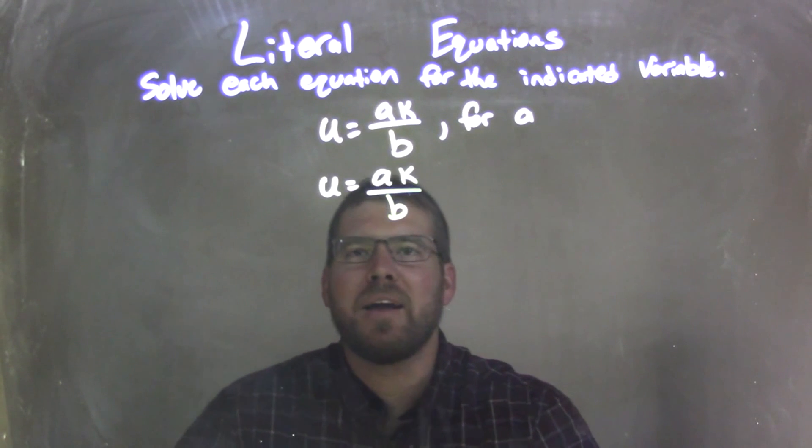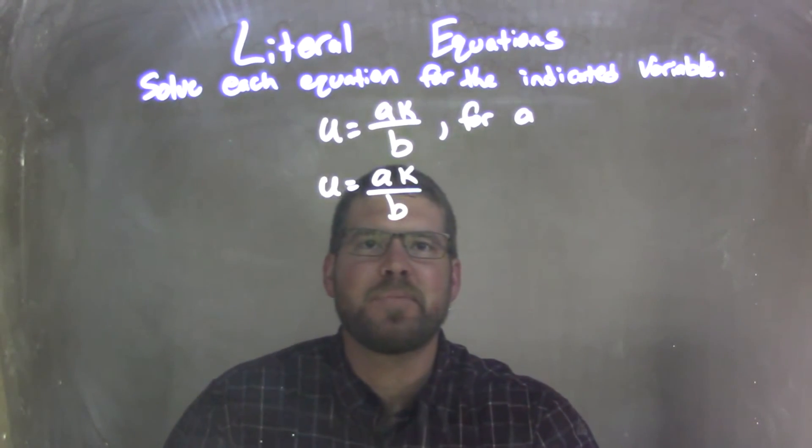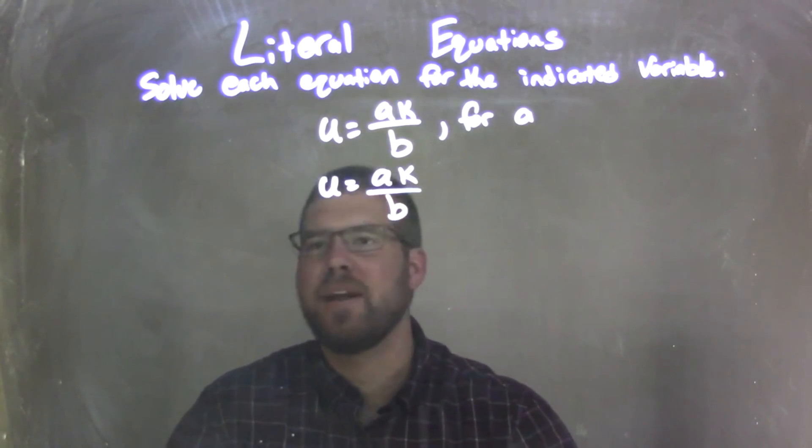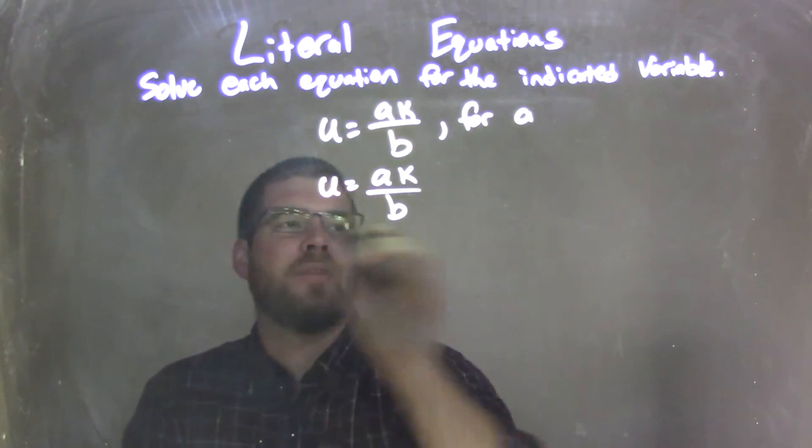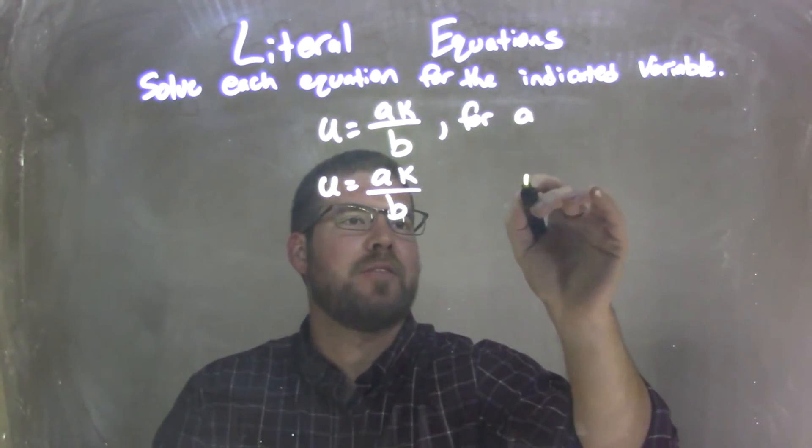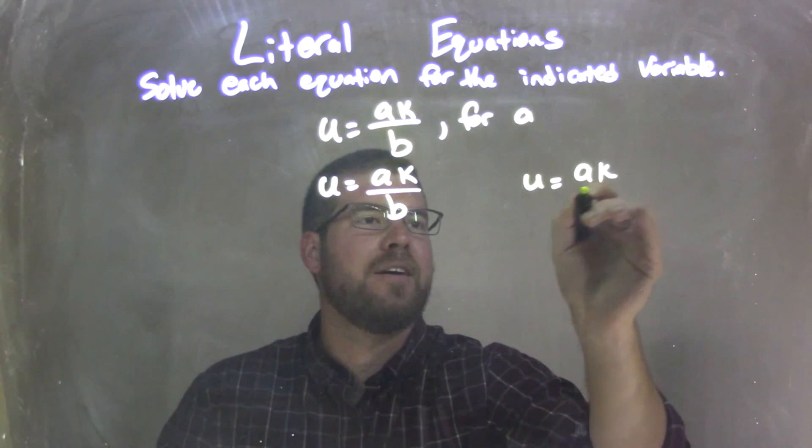And so here's my tip. Well, there's two ways to do it, and we'll solve them both ways here. So I'm going to rewrite it a second time right here so we can see our two methods. U equals AK over B.